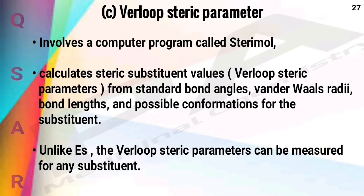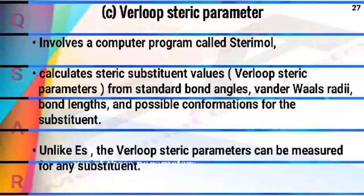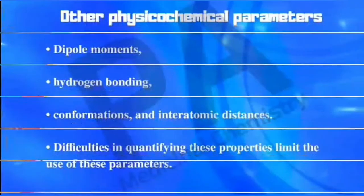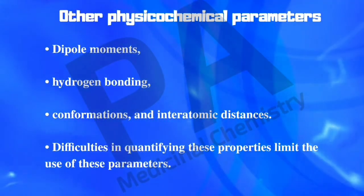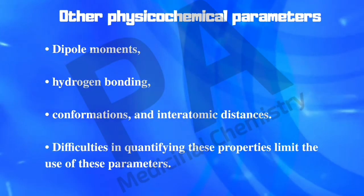The Verlu steric parameter involves a computer program called STERIMOL, which calculates steric substituent values from standard bond angles, van der Waals radii, bond lengths, and the possible conformations for the substituent. Unlike Es, the Verlu steric parameter can be measured for any substituent.